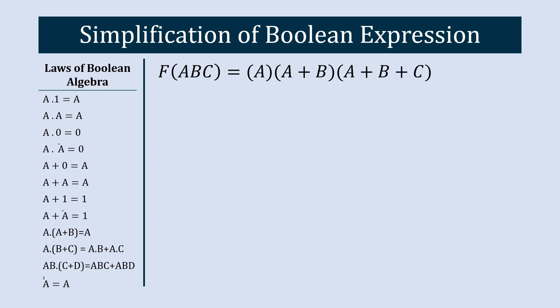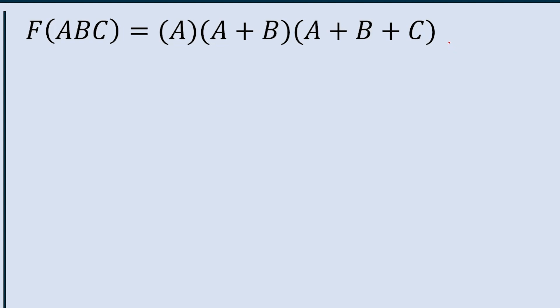In this video we are going to learn how to simplify a Boolean expression. This is our equation: A into A plus B, into A plus B plus C. First we will see how many gates we need to represent this equation. We have AND operation, then OR operation, then AND operation again, then OR and OR operations.